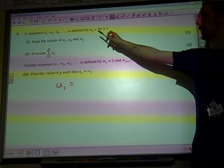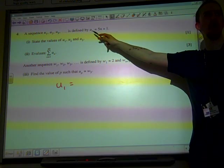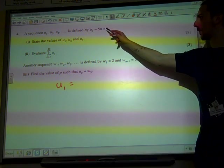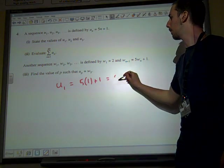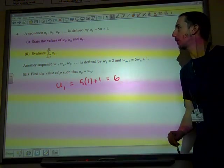U1 means what would happen if you put 1 in place of n. So that's just going to be 5 times 1 plus 1, or 6. So U1 is 6.